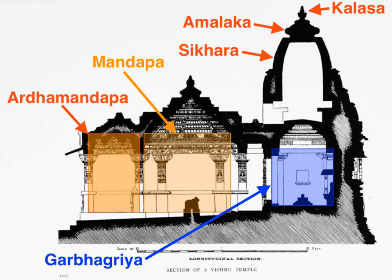The Kalinga style of architecture flourished in the eastern Indian state of Odisha and northern Andhra Pradesh. The style consists of three distinct types of temples: Rekha Deula, Pidha Deula and Khakhara Deula. Deula means 'temple' in the local language. The former two are associated with Vishnu, Surya and Shiva temples, while the third is mainly associated with Chamunda and Durga temples. The Rekha Deula and Khakhara Deula house the sanctum sanctorum, while the Pidha Deula constitutes outer dancing and offering halls. The Lingaraj temple of Bhubaneswar and the Jagannath temple of Puri are prominent examples of Rekha Deula. The Konark Sun temple is a living example of Pidha Deula.